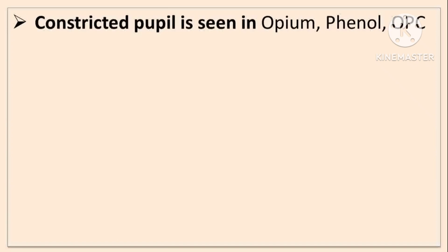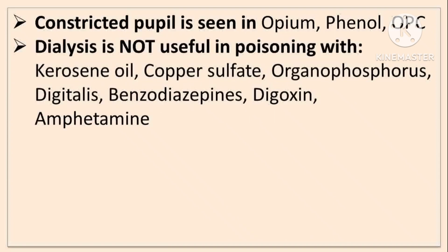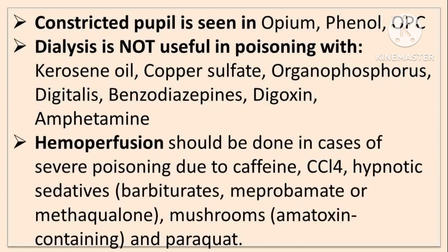Constricted pupil is seen in opium, phenol and organophosphorus poisoning. Hemodialysis is not useful in poisoning with kerosene, copper sulfate, organophosphorus, digitalis, benzodiazepines, digoxin and amphetamine. Hemoperfusion should be done in cases of poisoning due to caffeine, carbon tetrachloride, hypnotic sedatives like barbiturates, meprobamate or methaqualone, mushrooms containing amatoxins, and paraquat.